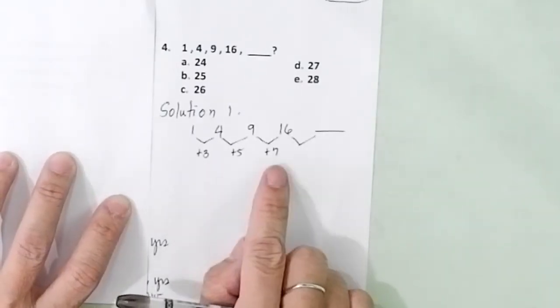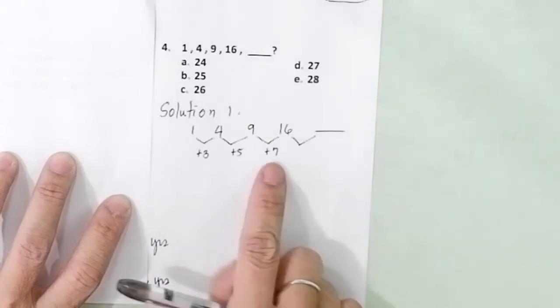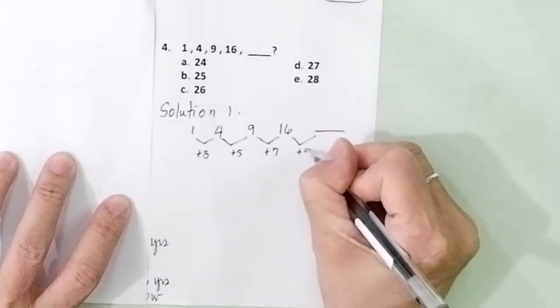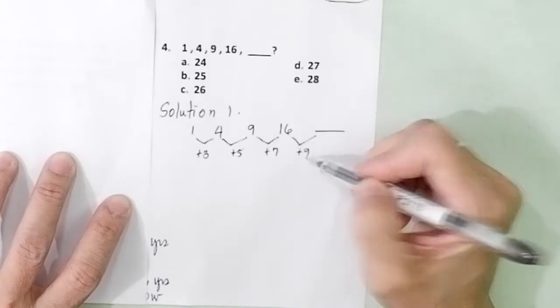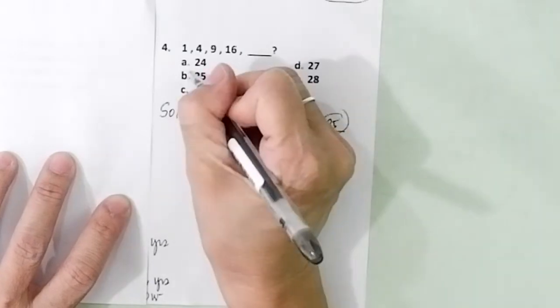You get 3, 5, 7. 3 plus 2, 5 plus 2, 7. Plus 2 is 9, isn't it? Now, you add this. 16 plus 9, you get 25. So the final answer is 25. Again, 1 plus 3 gives you 4. 4 plus 5 gives you 9. 9 plus 7 is 16. 16 plus 9 is 25.